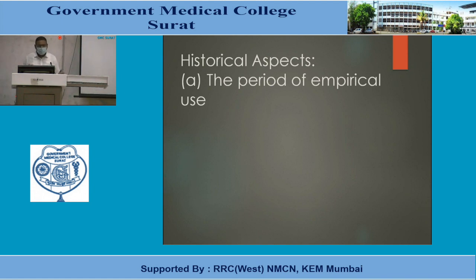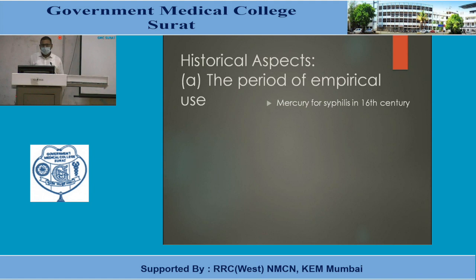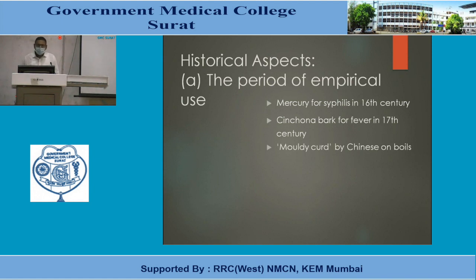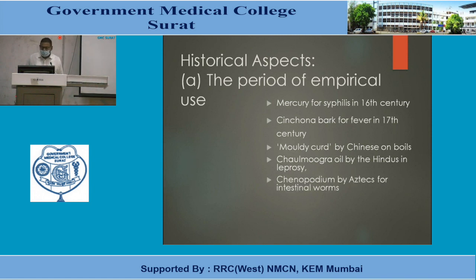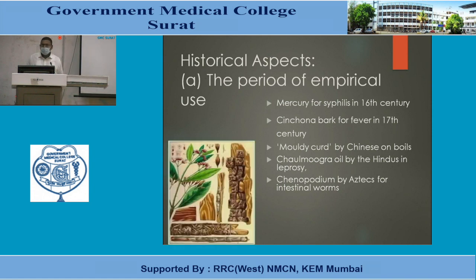The history of antimicrobial agents can be classified into three phases. The first is the phase of empirical treatment. Mercury was used since ages, especially for the treatment of syphilis. Cinchona bark was used for fever in the 17th century. Chaulmoogra oil was used to treat leprosy, and Chenopodium was used by Aztecs for intestinal worms.